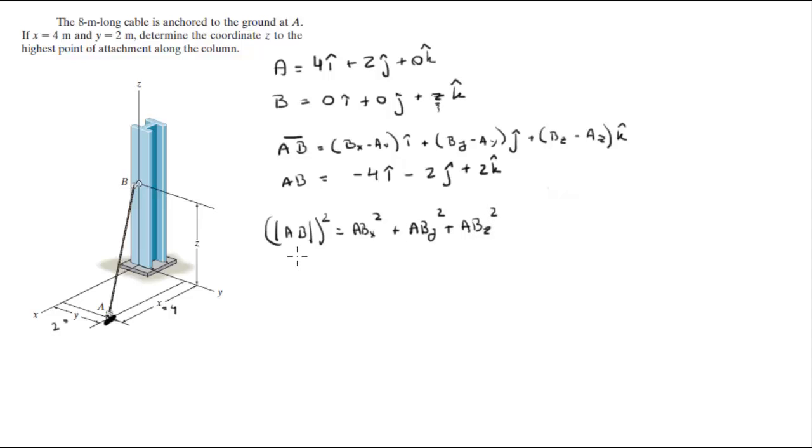So with this formula we are given the magnitude and we are told that it's 8. So we got 8 squared is equal to AB of x which we have is 4 squared which is 16, plus AB of y which is 2 squared which is 4, plus AB of z squared.